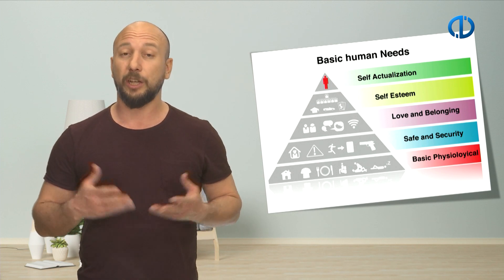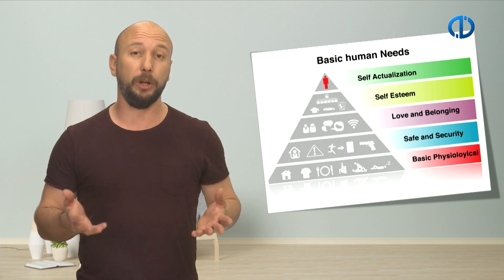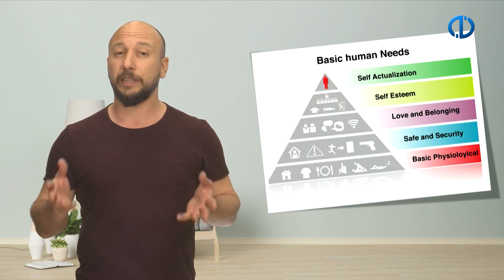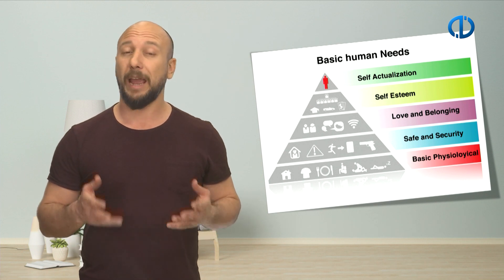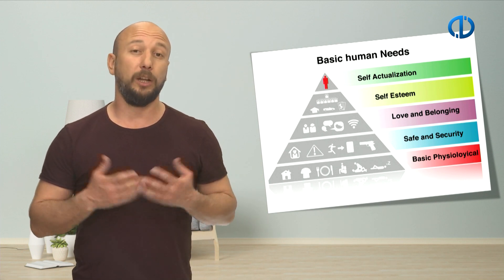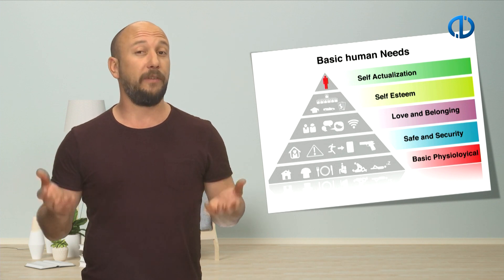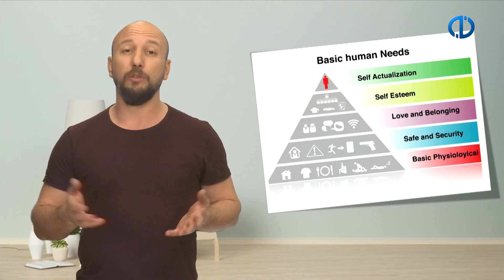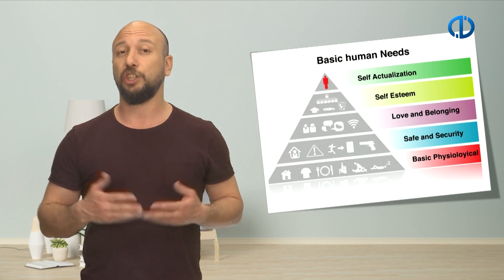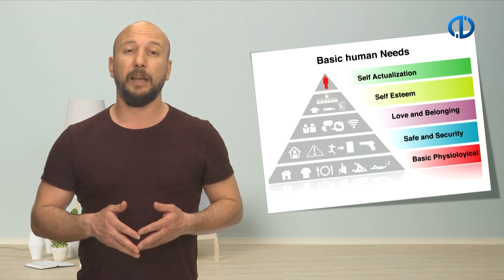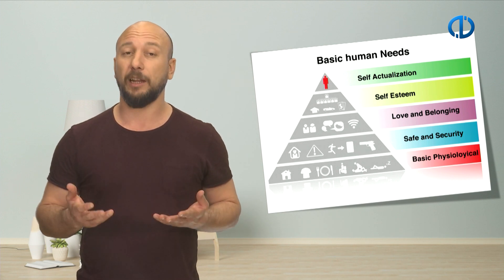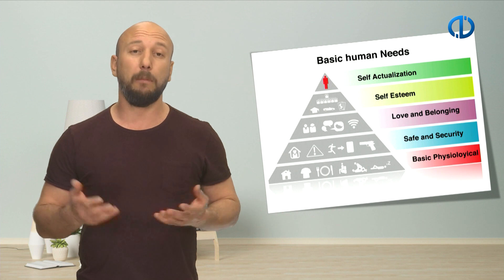The needs from the bottom level to the top can be listed as follows: basic physiological needs such as hunger, thirst, breathing, sexuality, and sleeping; the need for safety for family, job, and properties; social needs related to love and belonging such as family, social groups, and close friendship; the need for the appreciation of value, achievement, and respect; and self-actualization which covers the superiority of morality, creativity, and problem solution.